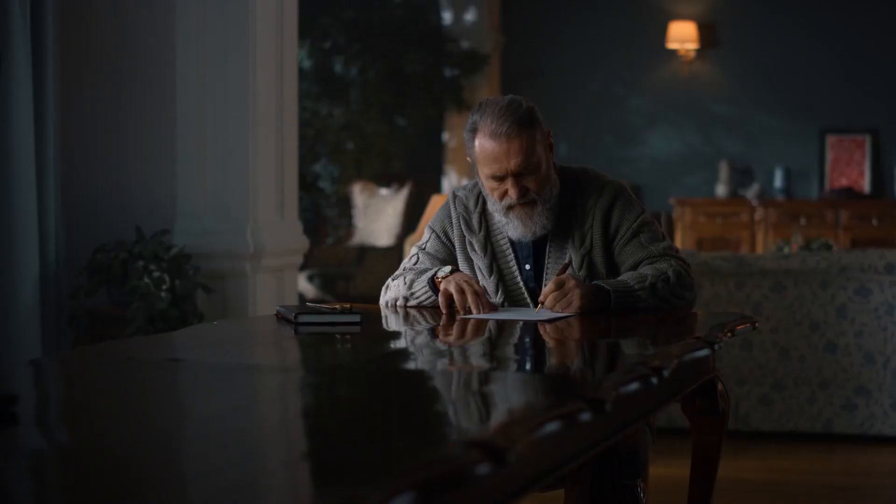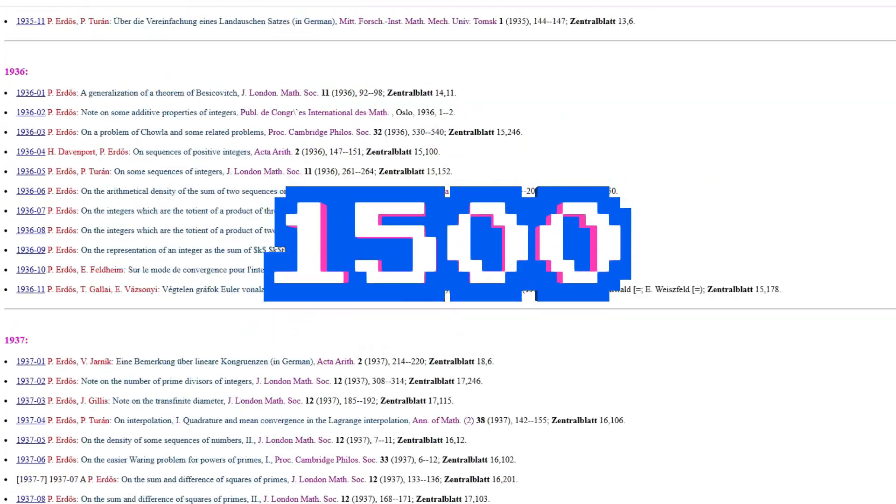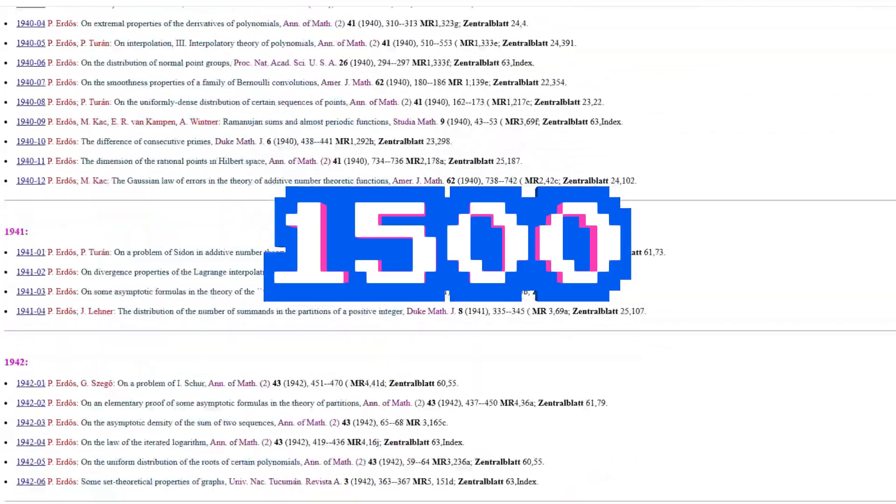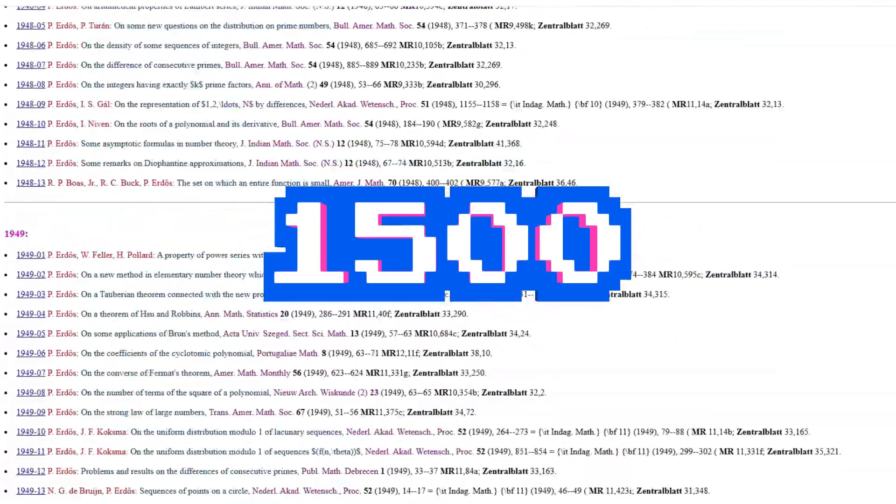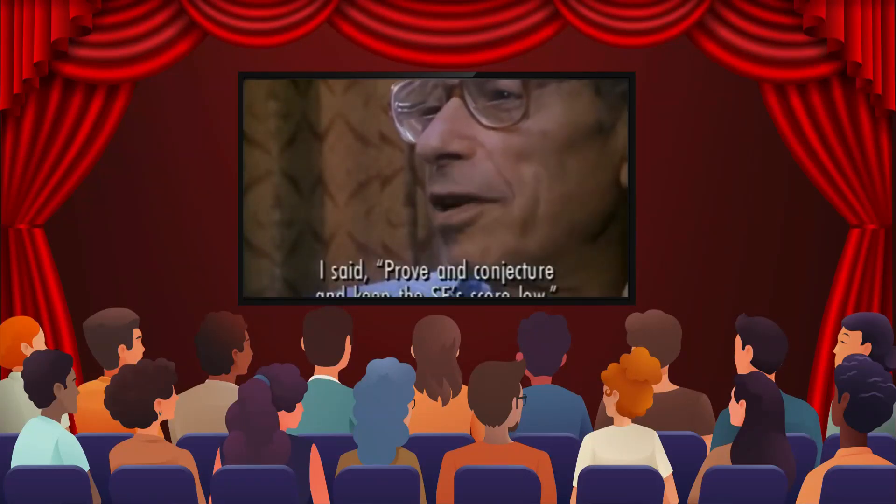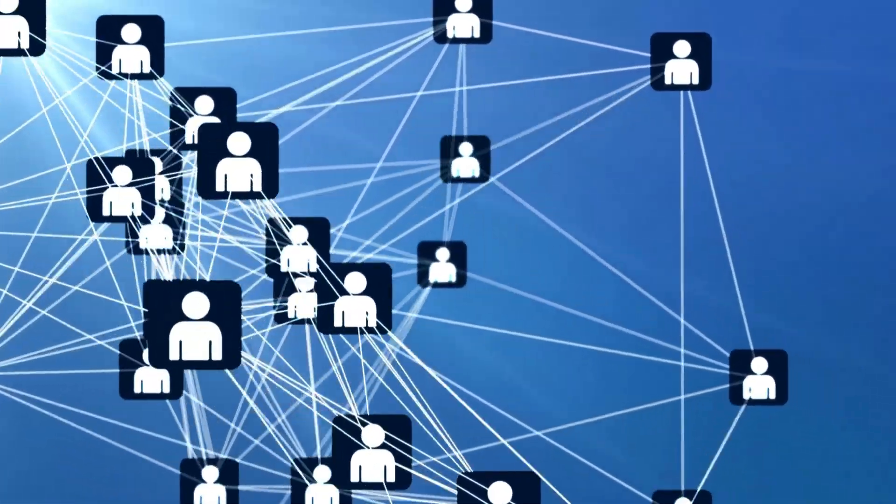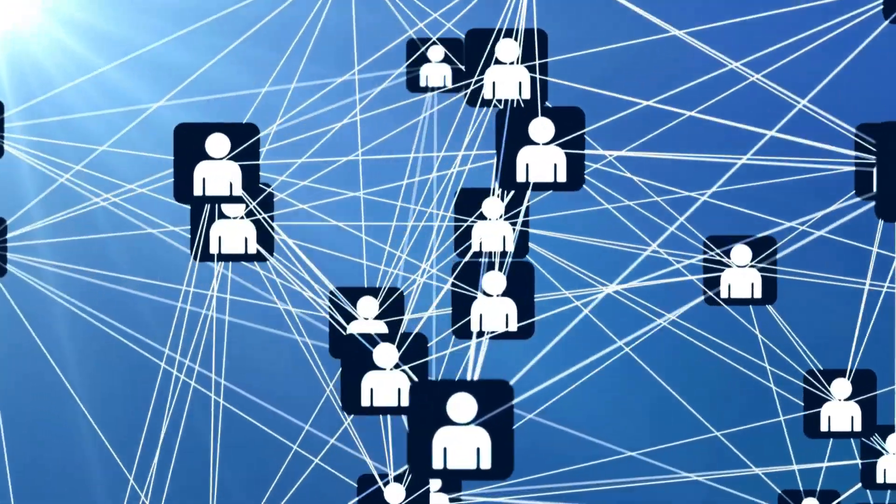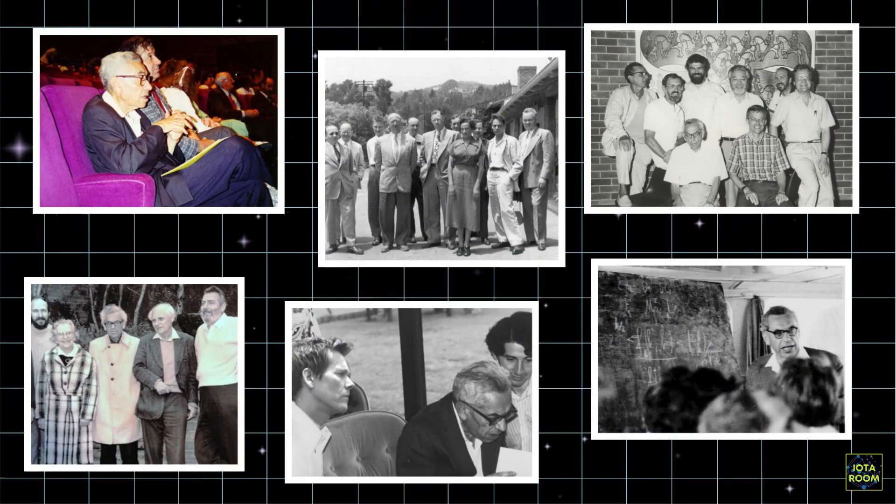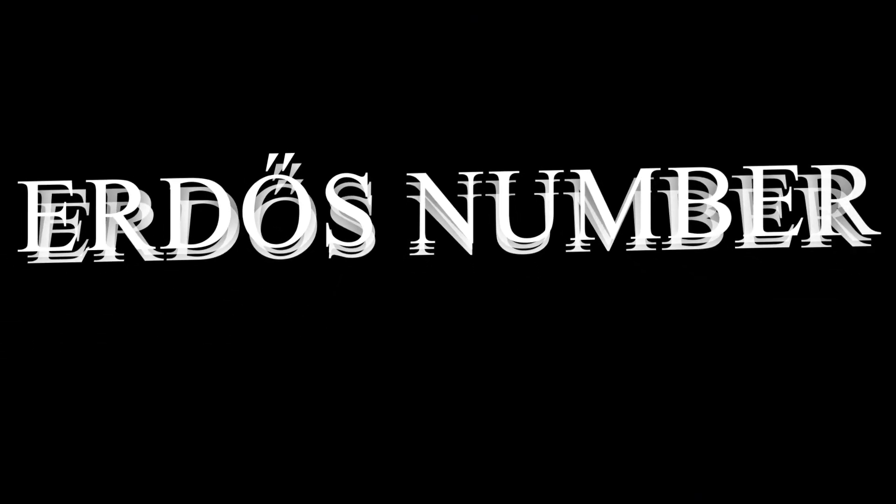Most people slow down as they get older. Paul Erdos? He did the opposite. He published over 1,500 papers, a record-breaking number, and continued travelling and proving theorems well into his 80s. Mathematics wasn't just his passion. It was his oxygen. He simply couldn't stop. But Erdos's greatest legacy wasn't just the problems he solved. It was the way he connected people. His collaborations became so legendary that mathematicians started tracking what became known as the Erdos number.